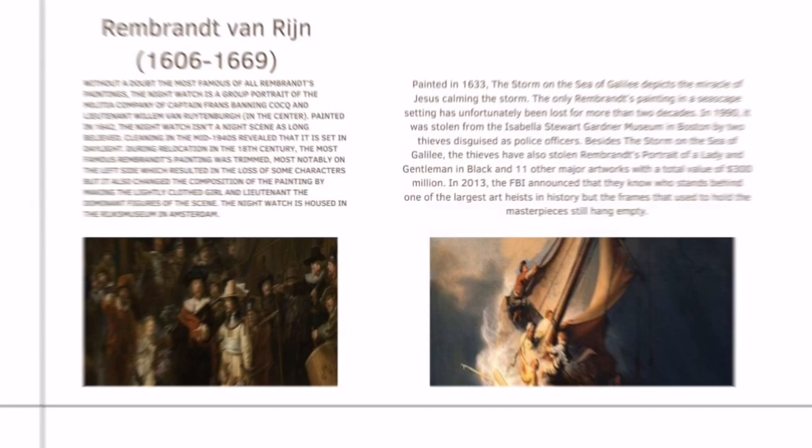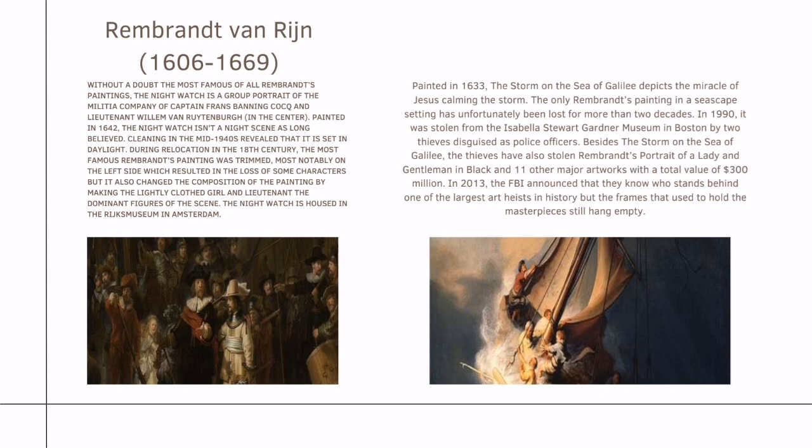The first picture is without a doubt the most famous of all Rembrandt's paintings. The Night Watch is a group portrait of the Militia Company of Captain Frans Banning Cocq and Lieutenant Willem van Ruytenburch. Painted in 1642, the Night Watch isn't a night scene as long believed. Cleaning in the mid-1940s revealed that it is set in daylight. During relocation in the 18th century, the painting was trimmed, most notably on the left side, resulting in the loss of some characters, and changing the composition by making the lightly clothed girl and lieutenant the dominant figures of the scene.